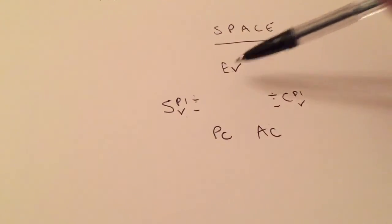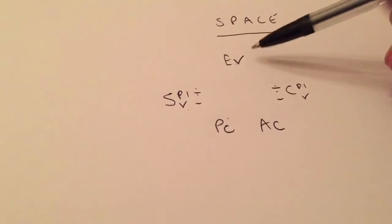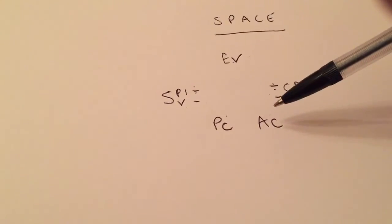SV, earn value minus planned cost. And CV, earn value minus actual cost.